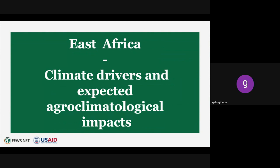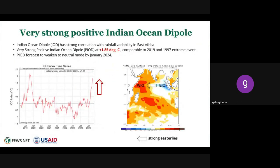My name is Gideon Gallu, Regional Field Scientist for Eastern Africa. I'll be providing a brief on key climate drivers for our region and the expected outcomes in terms of rainfall, temperature, and agricultural productivity. I start with the most influential climate driver for our region—the Indian Ocean Dipole—because of its proximity to Eastern Africa.